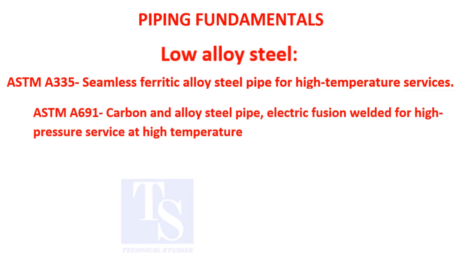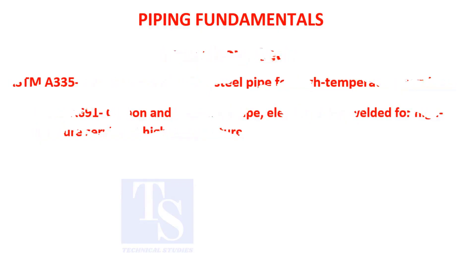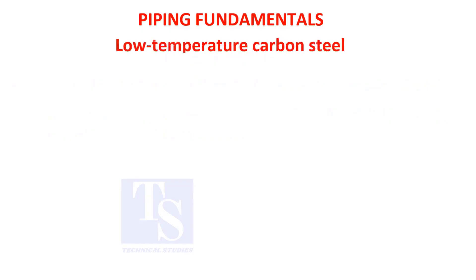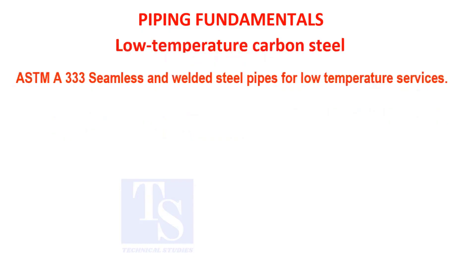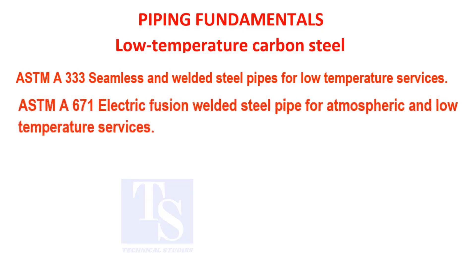ASTM A-691: carbon and alloy steel pipe, electric fusion welded, for high temperature and high pressure services. ASTM A-333: seamless and welded steel pipe for low temperature services. ASTM A-671: electric fusion welded steel pipe for atmospheric and low temperature services. Available sizes are larger than 16 inches.